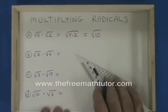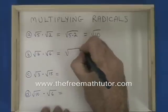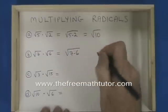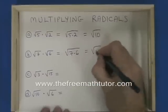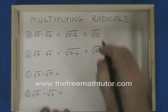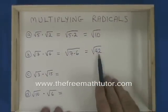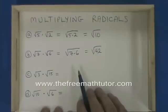Root 7 times root 6 is therefore the square root of 7 times 6, which is the square root of 42. We cannot simplify this further because 42 does not have any factors that are a square.